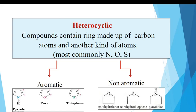The second category is heterocyclic compounds — compounds containing a ring made up of carbon atoms and another kind of atom like nitrogen, oxygen, and sulfur. These are of two types: aromatic heterocycles and non-aromatic heterocycles. Examples of aromatic heterocycles are pyrrole, furan, and thiophene. Examples of non-aromatic heterocycles are pyrrolidine and tetrahydrofuran.